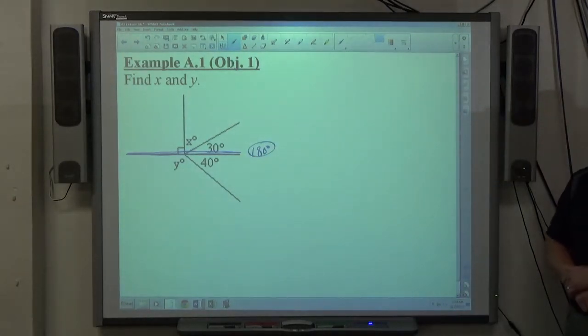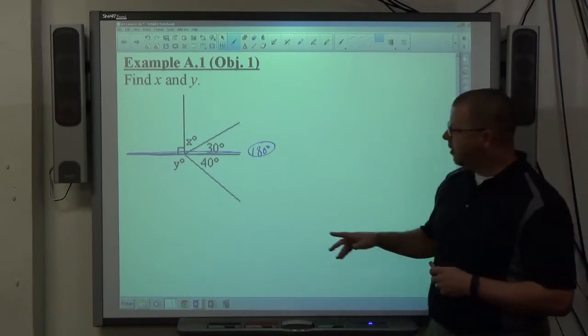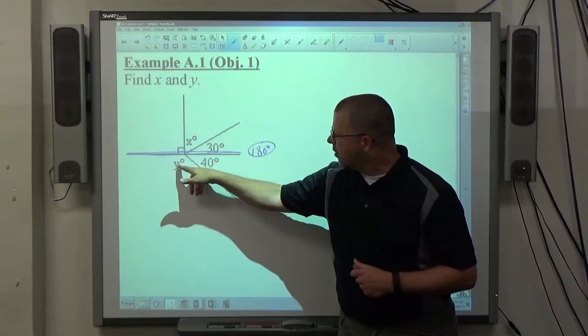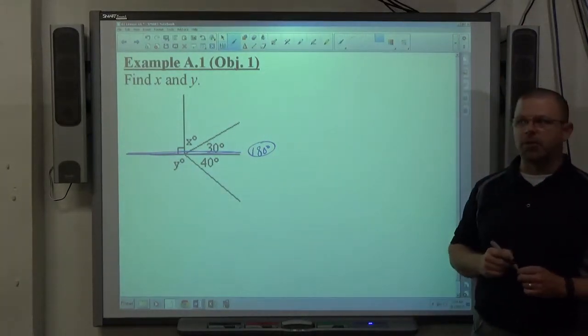So a straight line has 180 degrees, and if we take a look at the two bottom angles, start off with those two, y and 40, those two angles together create the entire straight line. You can see they have an adjacent side, the non-adjacent sides form a straight line. So these two angles here, they're referred to as supplementary angles.